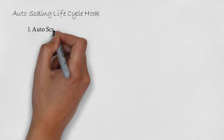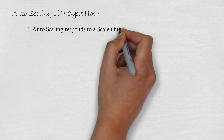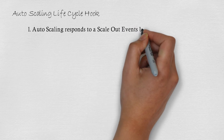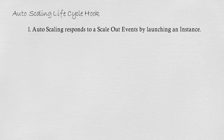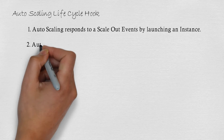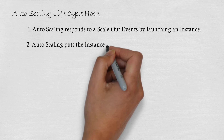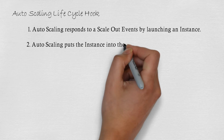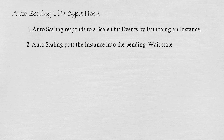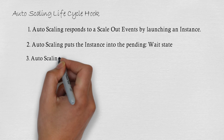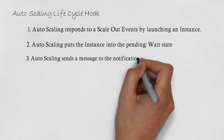So what is the autoscaling lifecycle hook? Autoscaling responds to a scale-out event by launching an instance. When the demand is up, autoscaling automatically scales out. When demand scales out, autoscaling puts the instance into a pending wait state.